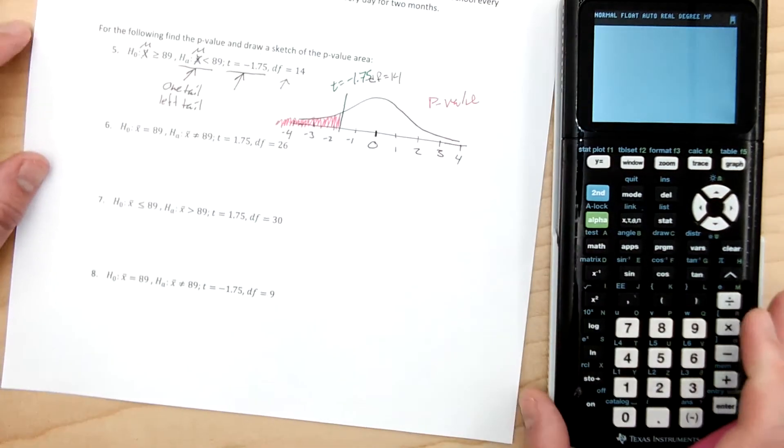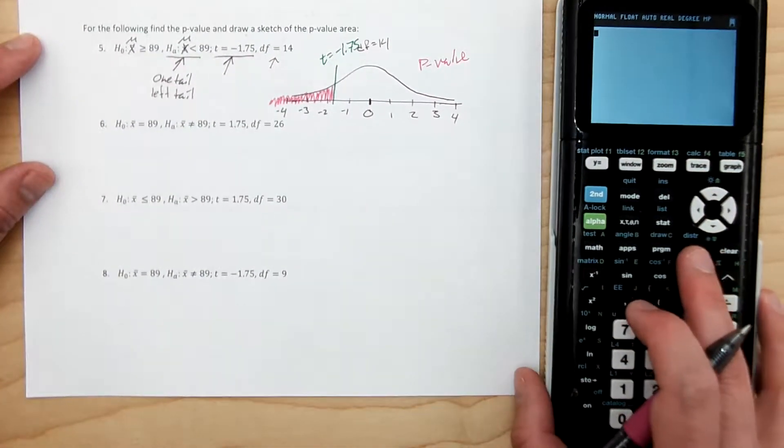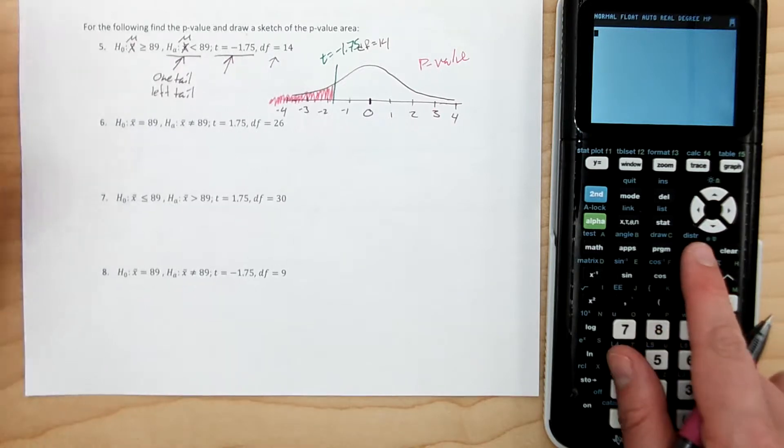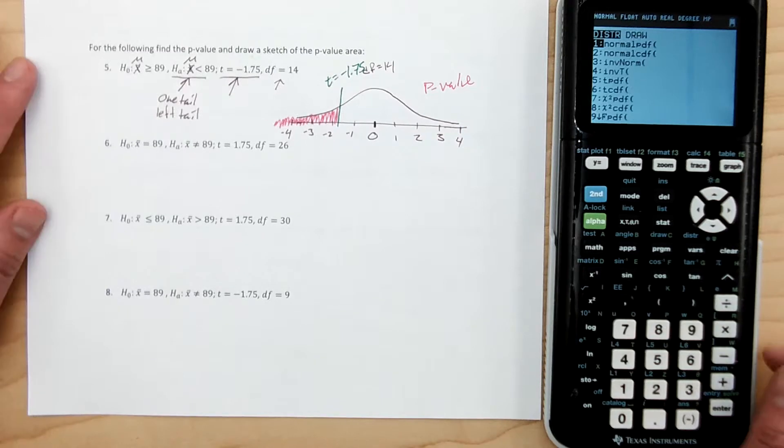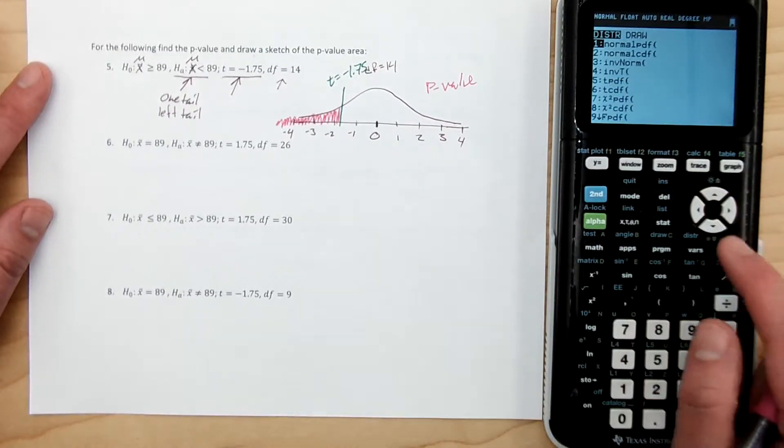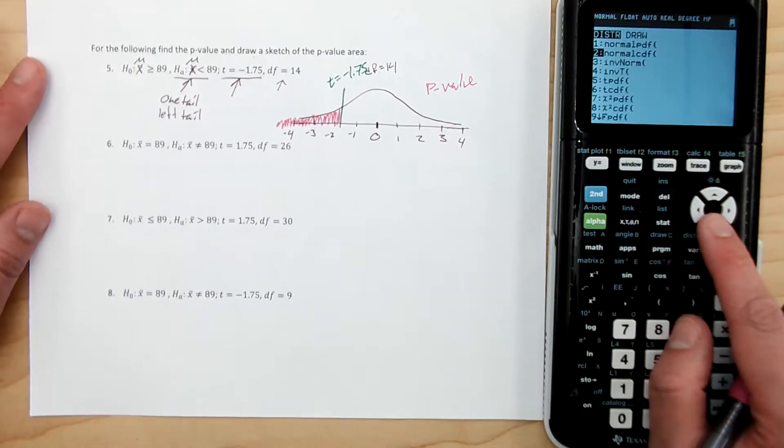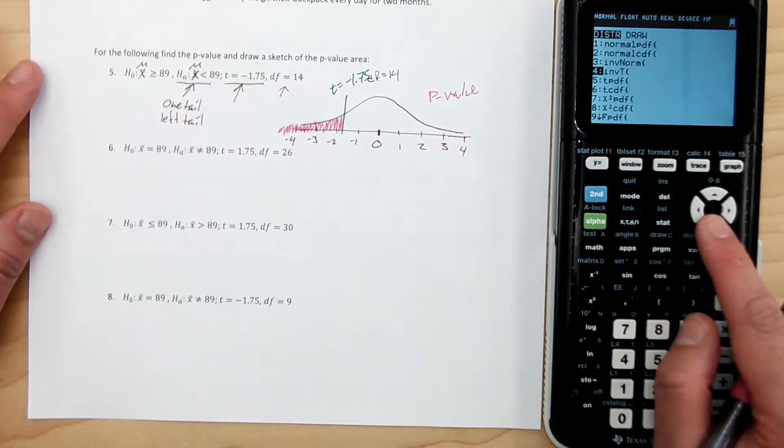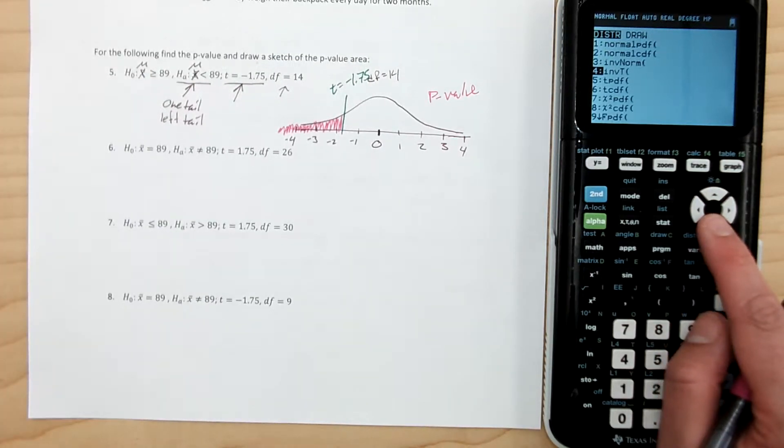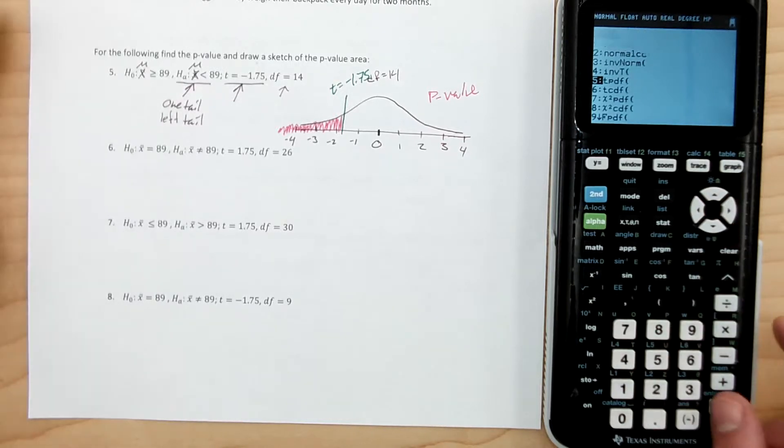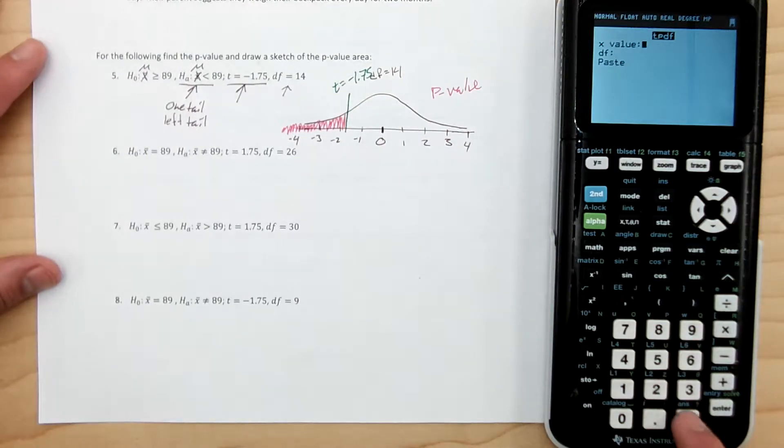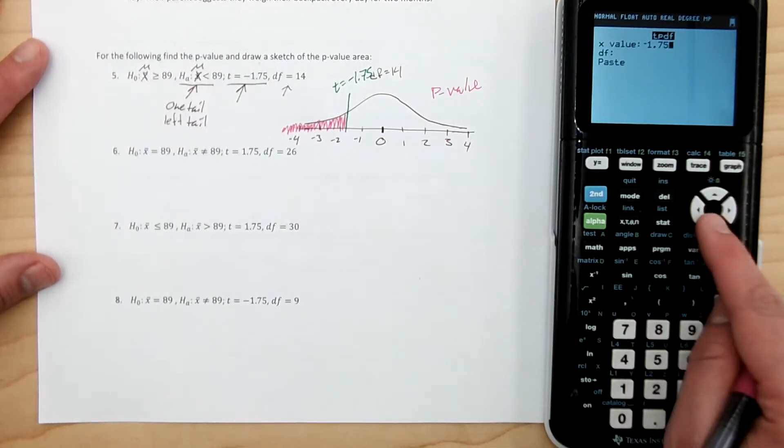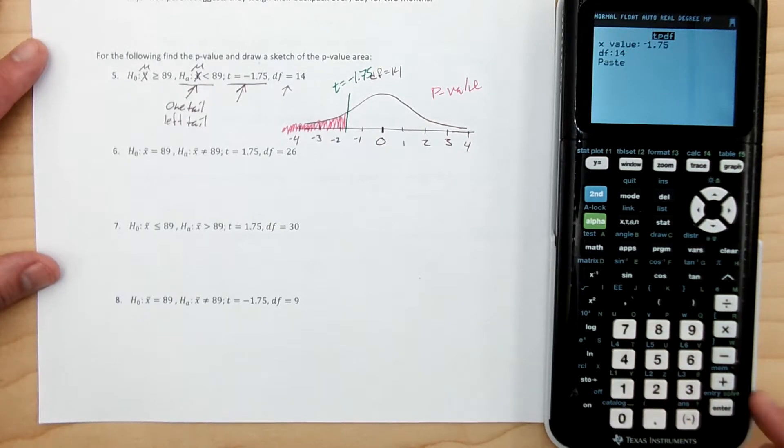And so where we want to go in our calculator is we want to go to here to distribution. So you're going to look for the button that says D-I-S-T-R for distribution, so we're going to hit second distribution. And we're on the T, and so we're going to look for the T-CDF. So I'm going to put in the value I'm looking for, so negative 1.75, and the degrees of freedom are 14. I'm going to hit enter.